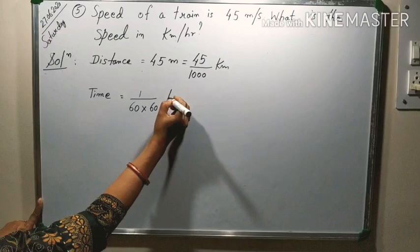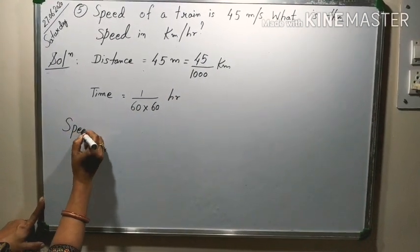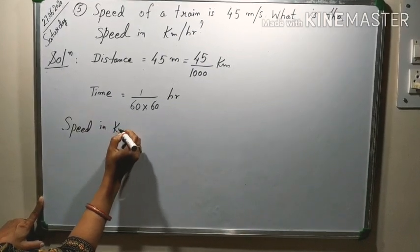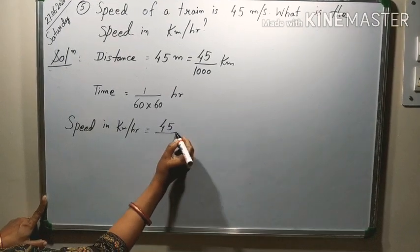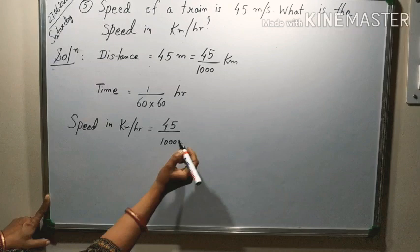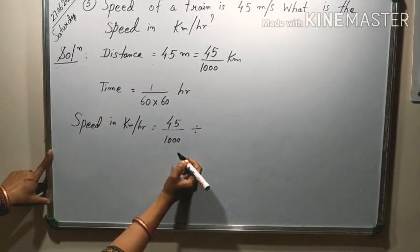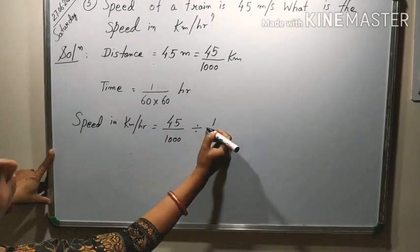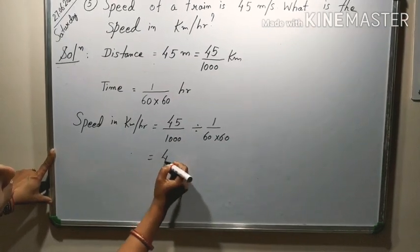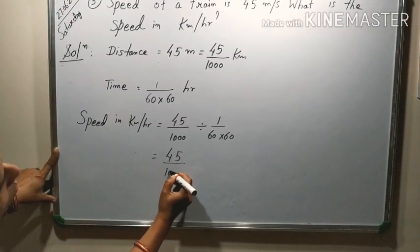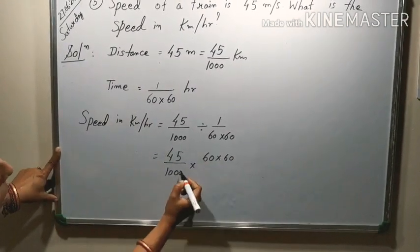So, time is 1 by 60 into 60. Now, come to this speed in kilometer per hour. It will be first this 45 by 1000 distance and it is speed is distance by time. Distance we have already written, time is divided by this. So, it becomes 45 over 1000 divided by 1 over 3600.